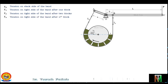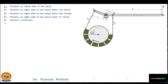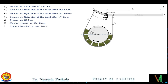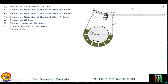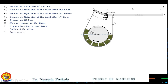The defined variables are: μ as the coefficient of friction, N as the normal reaction on the block, 2θ as the angle subtended by each block, Rd as the radius of the drum, and P as the force applied at the end of the lever.